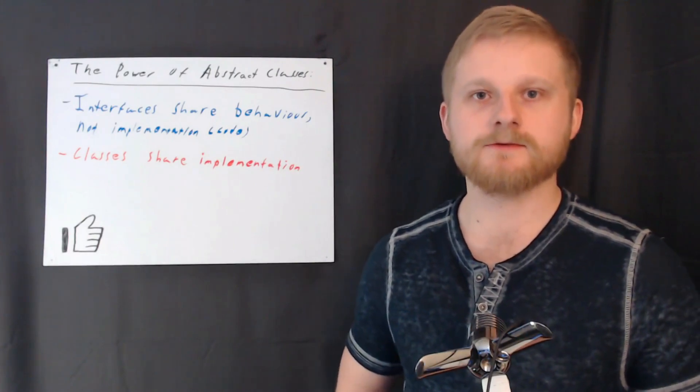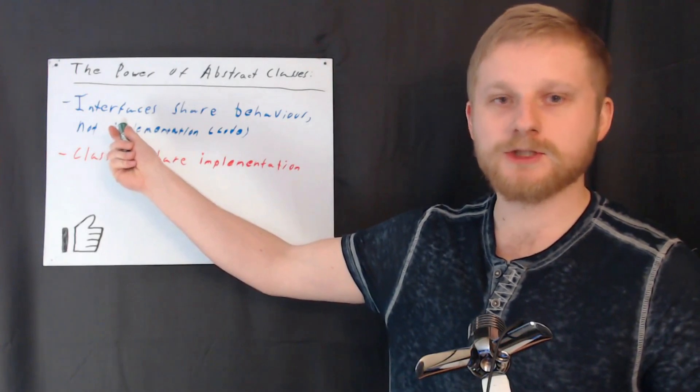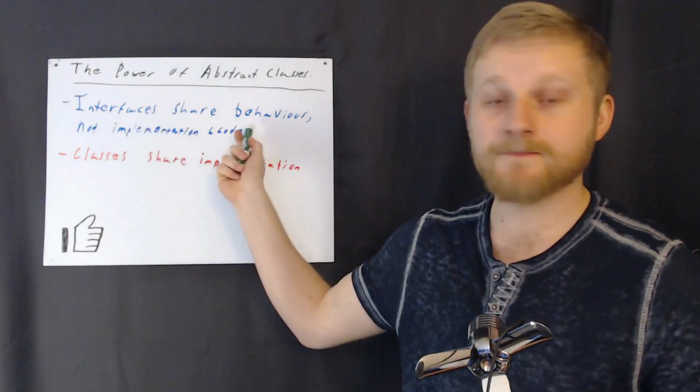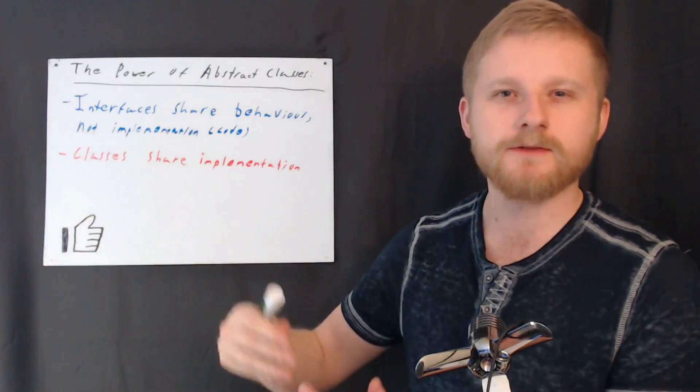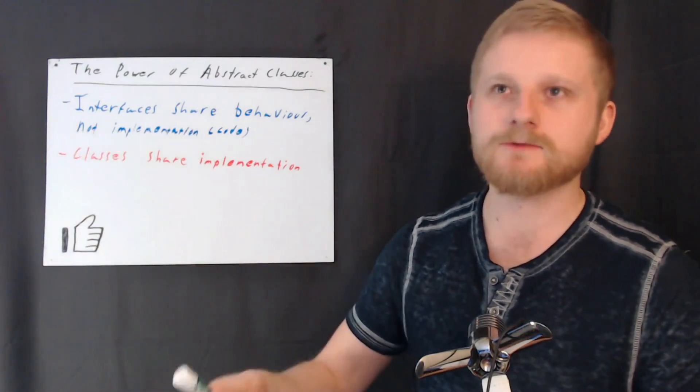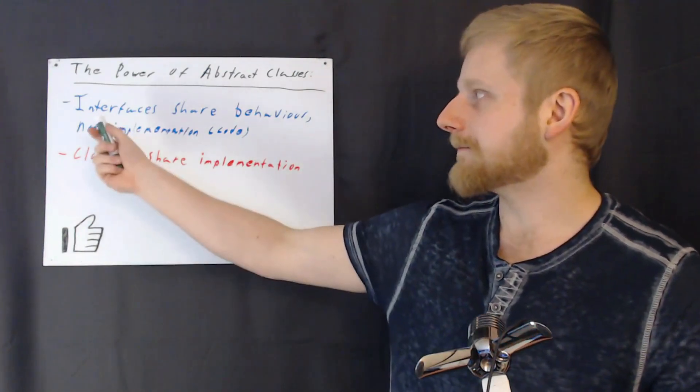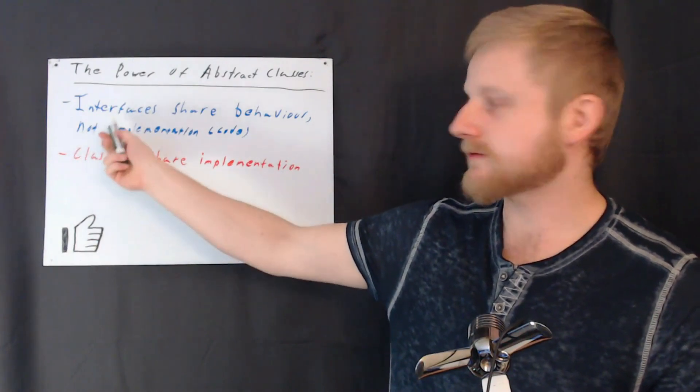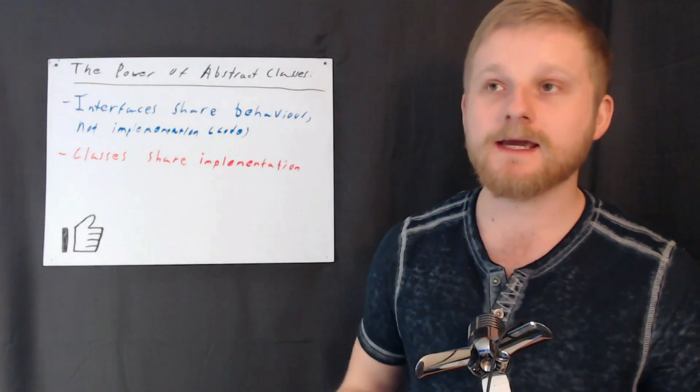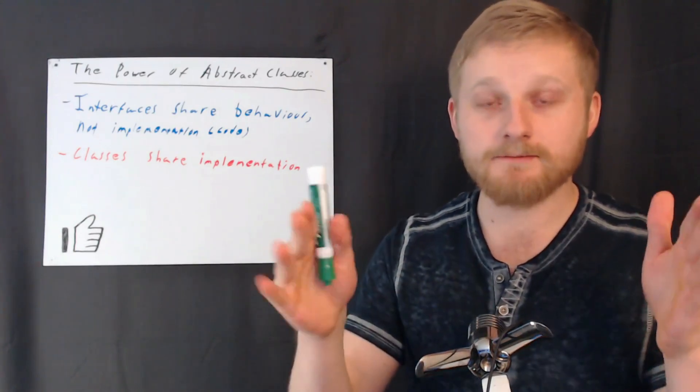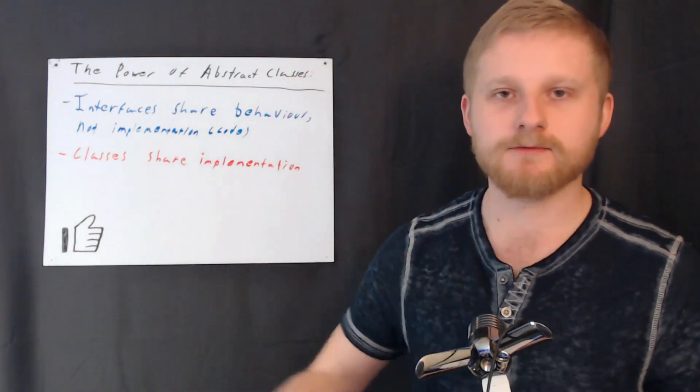When it comes to interfaces, one of the ways I like to talk about it is that an interface allows you to share behavior, but not implementation between a set of inheritors. In Java you say implements, but let's just say it's all inheritance. Whatever inherits from the interface has to share the behavior of the interface, and when I say behavior, here I mean very specifically the function or method's signature, but not the actual body of the method or function.